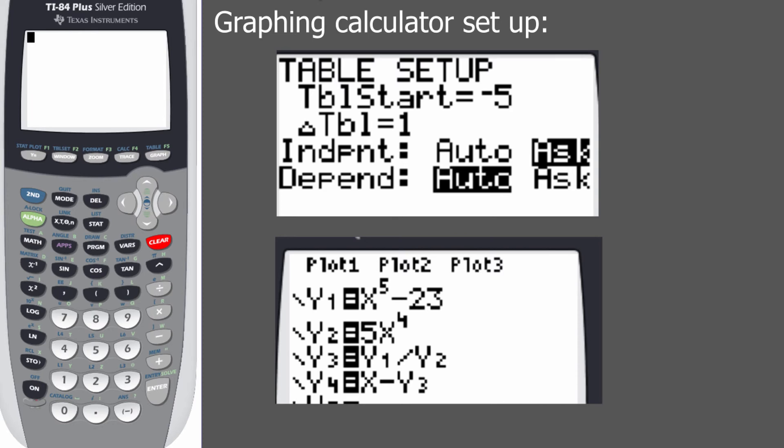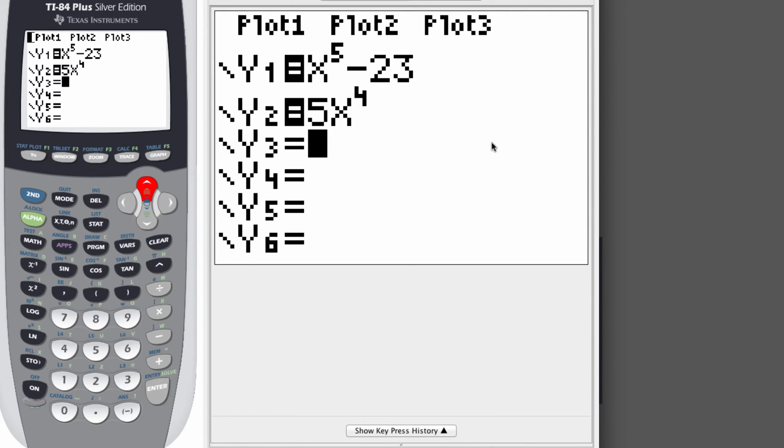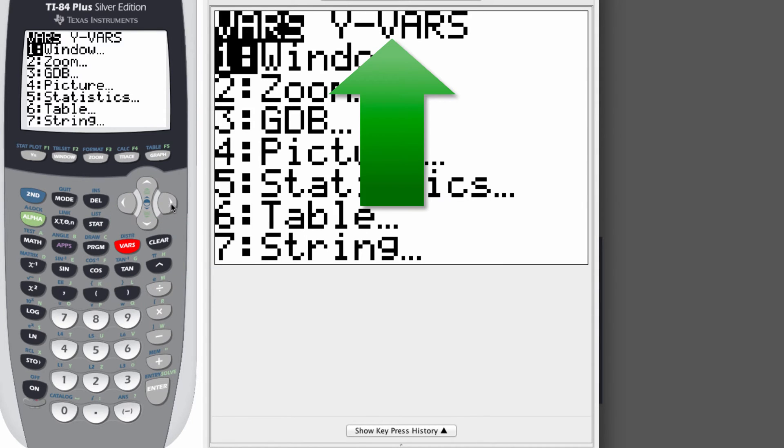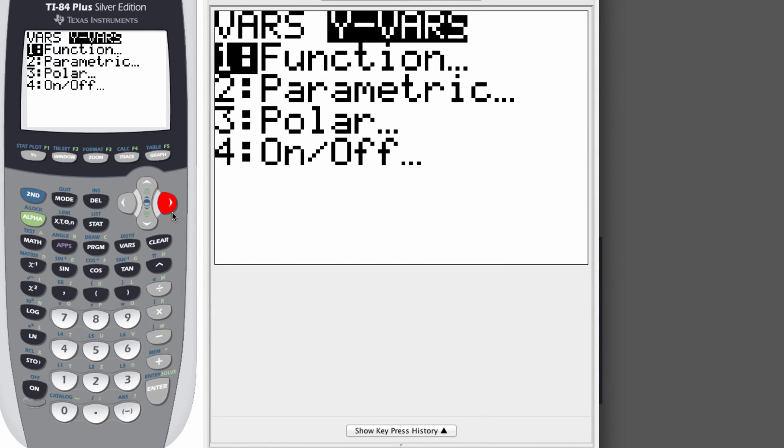Now if you forget how to put in the y1 or the y2, let me just review that with you really quickly. So in your y equals menu, what you're going to do first is hit the vars key. Then you're going to arrow over to yvars. Next, you'll choose function number one.